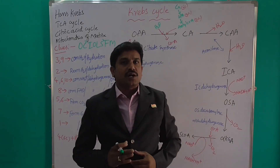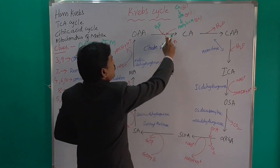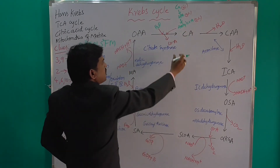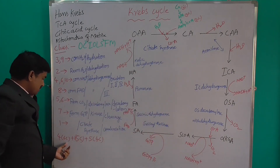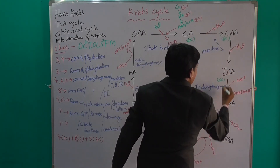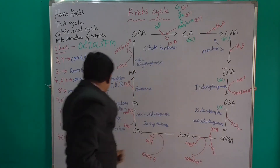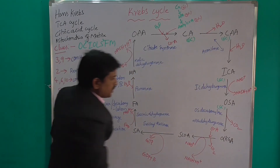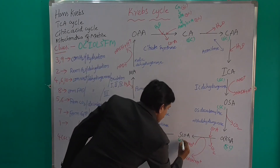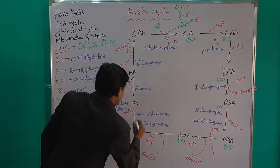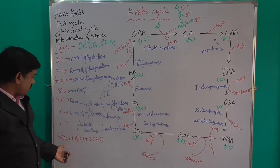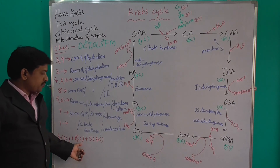Let us count the carbons in each product. Glucose has 6 carbons, Pyruvic acid has 3 carbons, and Acetyl-CoA has 2 carbons. The first stable product is Citric acid with 6 carbons. In the cycle: four compounds have 6 carbons, one compound has 5 carbons (Alpha-Ketoglutaric acid), and the remaining five compounds have 4 carbons.